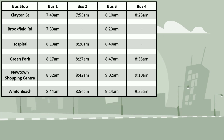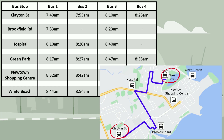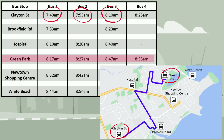We can use this information in a few ways. Let's say I want to get to Green Park and Clayton Street is the closest stop to my home. The timetable shows that I have four options. One bus leaves Clayton Street at 7.40, another leaves at 7.55, another at 8.10, and another at 8.25.